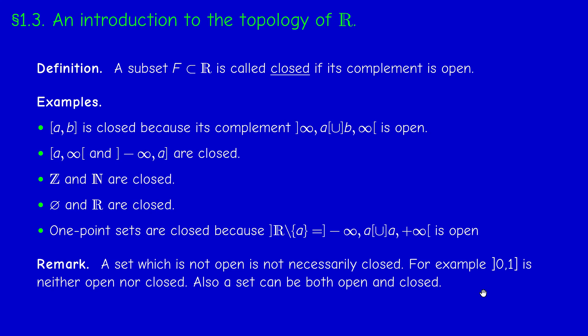Now, a remark. A set which is not open is not necessarily closed. For example, this interval (0,1], open at zero, closed at one, is neither open nor closed. But also, a set can be both open and closed. For example, the empty set and R are both open and closed, according to our definition.